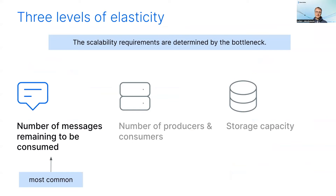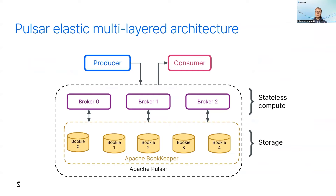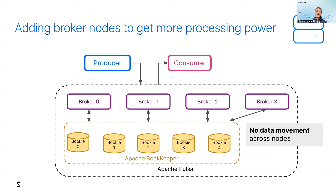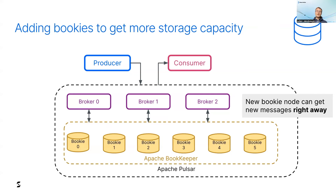Let's explore how Pulsar can handle a rapidly increasing number of consumers and producers. There are two types of nodes: broker nodes and bookie nodes. The broker nodes are responsible for managing all the communication and processing of the topics, so they are stateless. In contrast, the bookie nodes are responsible for storing messages. If you need more processing power, you add more brokers, and because their state is stored in the BookKeeper tier, Pulsar will take care of all connection moving transparently. Comparing this to Kafka, adding a new broker in Kafka requires rebalancing data across the cluster — but you don't need that with Pulsar. When you need to store more data, you just add more bookies, and as soon as you add a new bookie, it's immediately eligible for receiving new messages. There is no data rebalance involved.